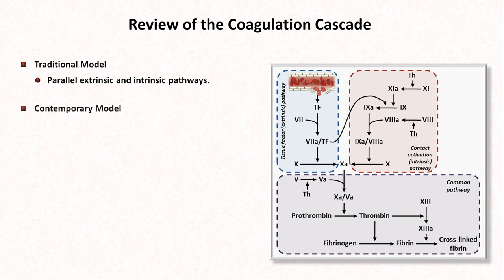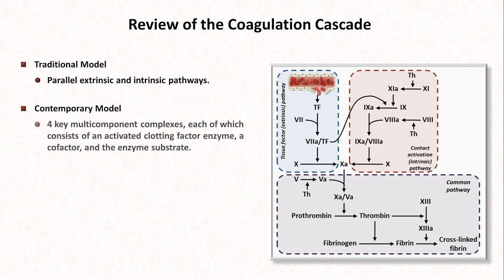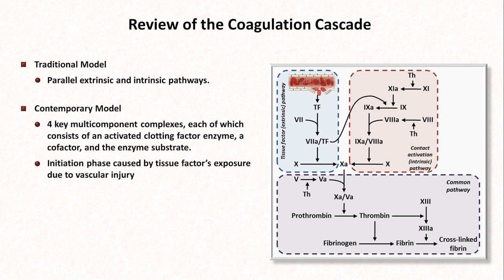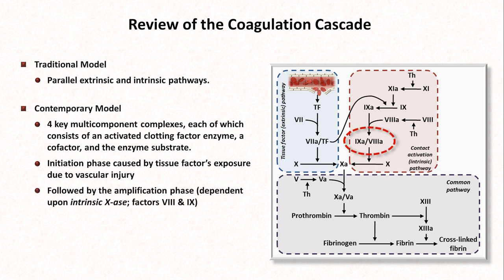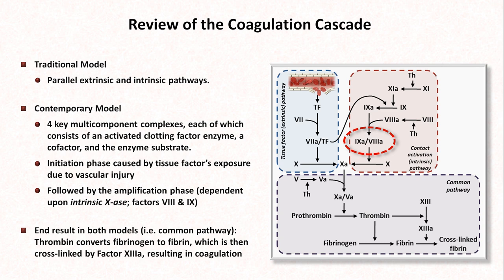Contemporary thinking, however, is shifting towards a slightly different paradigm, in which the focus is not two separate pathways, but rather four key multi-component complexes, each of which consists of an activating clotting factor enzyme, a cofactor, and the enzyme substrate. The initiation phase of clot formation is caused by tissue factor exposure to vascular injury. This is followed by the amplification phase, which is dependent upon intrinsic tenase — one of the key multi-component complexes, which consists of activated factor VIII and activated factor IX. When it comes to hemophilia, this intrinsic tenase, or a lack thereof, is critically important. The end result in the contemporary model is the same common pathway.